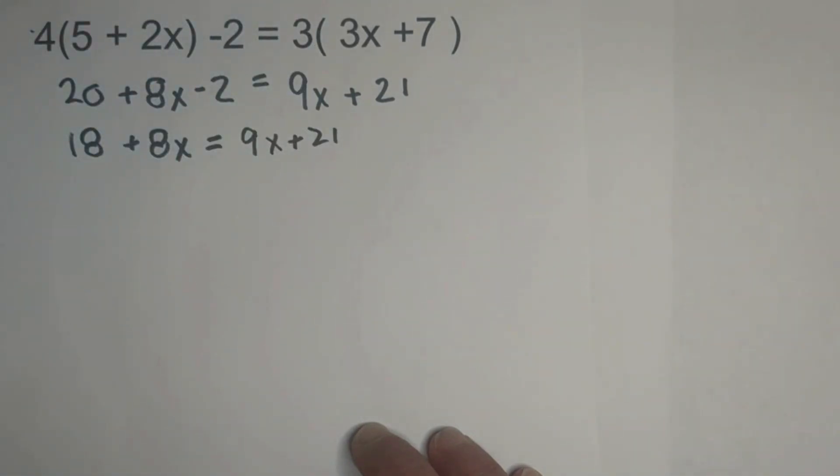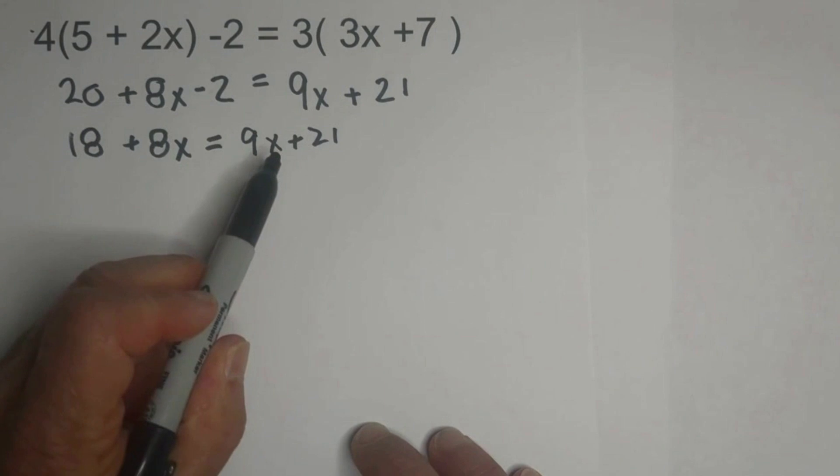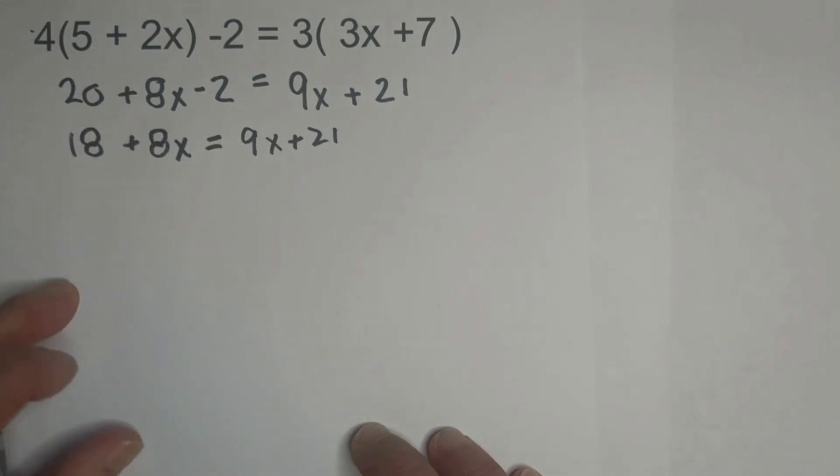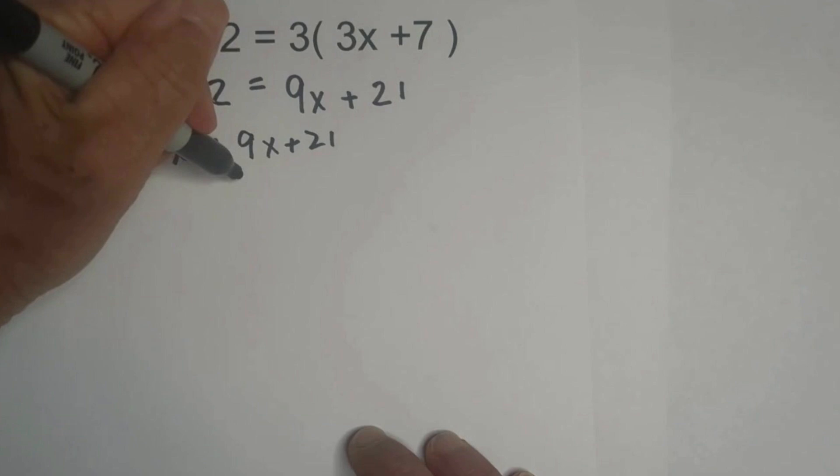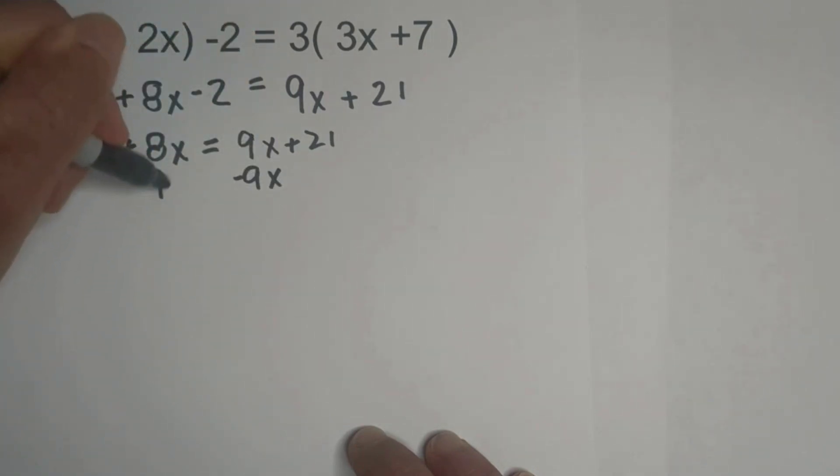Now what we're going to do is we're going to move variables to the left. Since this is an addition, we're going to do the opposite. We're going to subtract 9x from both sides, so bring down the 18.